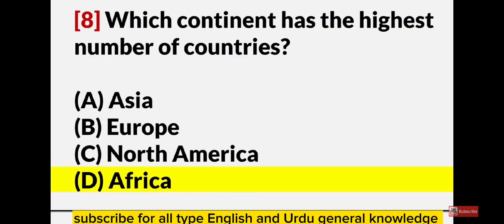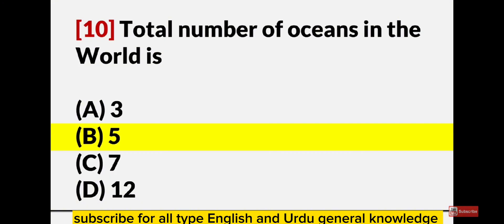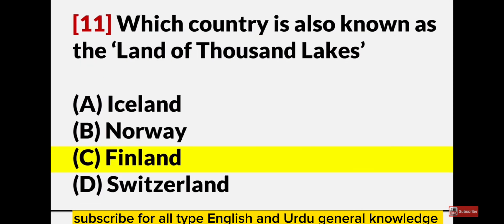Which continent has the highest number of countries? Africa. In which country is the white elephant found? Thailand. The total number of oceans in the world is 5. Which country is also known as the land of Thousand Lakes? Finland.